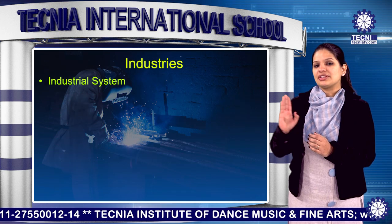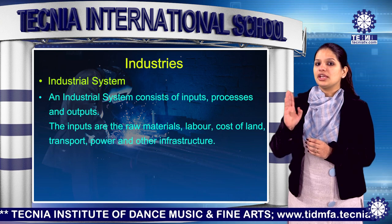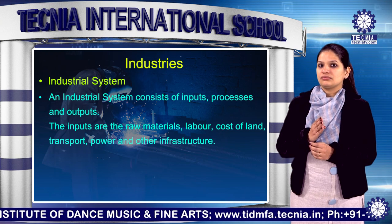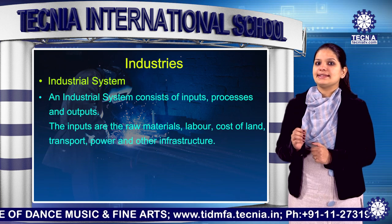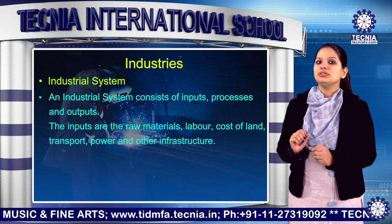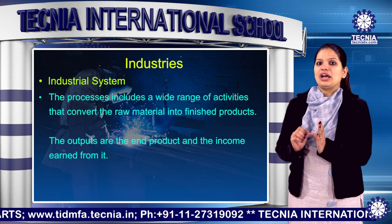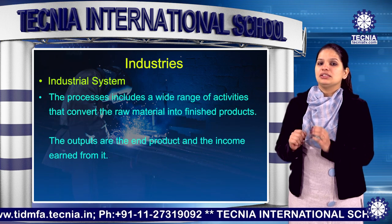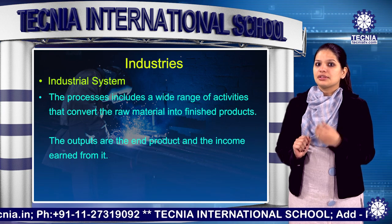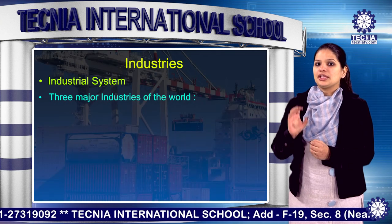Now I will introduce you to the industrial system. An industrial system consists of inputs, processes and outputs. The inputs are the raw materials, labour, cost of land, transport, power and other infrastructure. The process includes a wide range of activities that convert the raw material into a finished product. The output is the end product or the income earned from it.